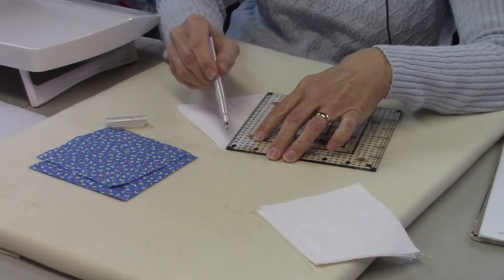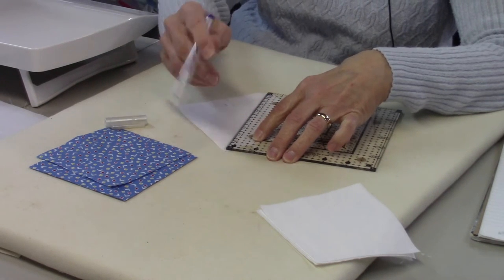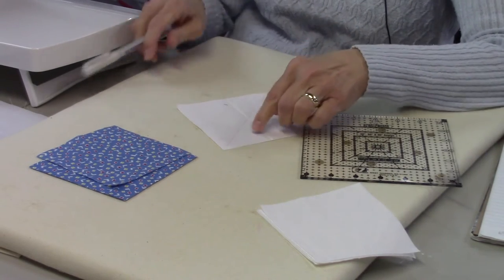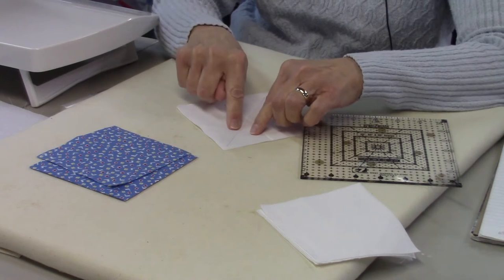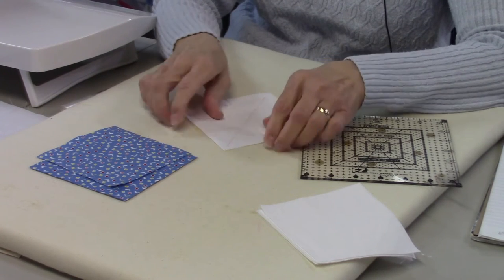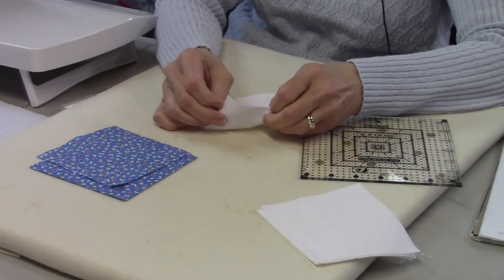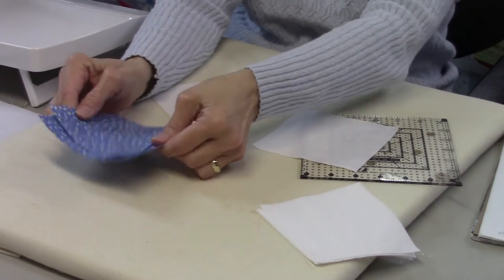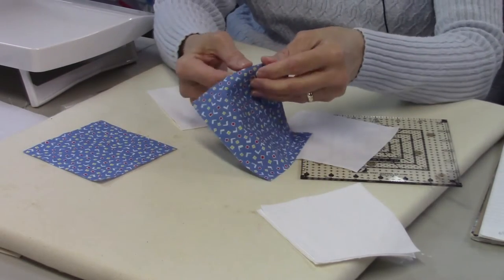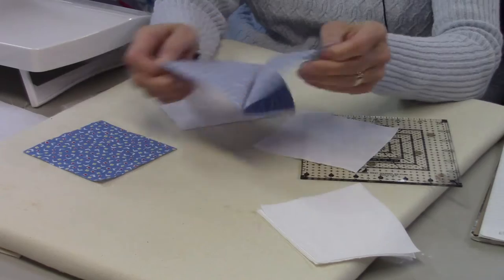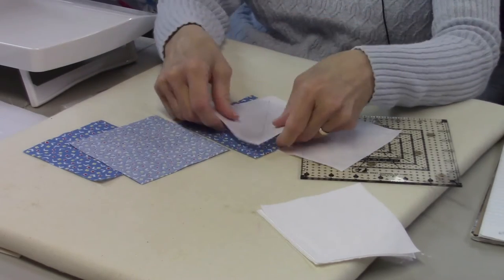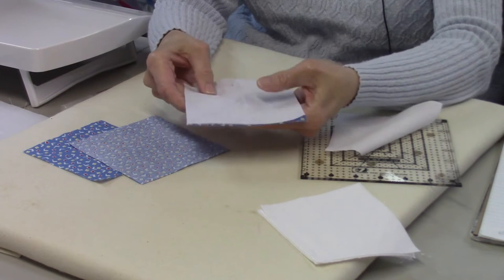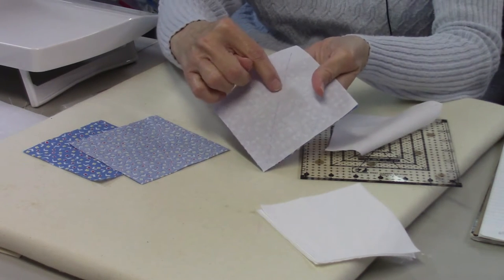I'm going to sew a quarter inch from on both sides of this line and then I will also cut there. I'm going to match these up with the four and seven-eighths inch main color squares, right sides together, line up all the raw edges, and then stitch a quarter inch away from this line on both sides.